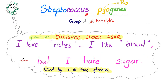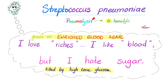Do you remember my previous video on Streptococcus pyogenes? What did Strep pyogenes say? She said: I love riches, I like blood, but I hate too much sugar. Streptococcus pneumoniae will dance on the same rhythm: I love riches, I like blood, I hate too much sugar.